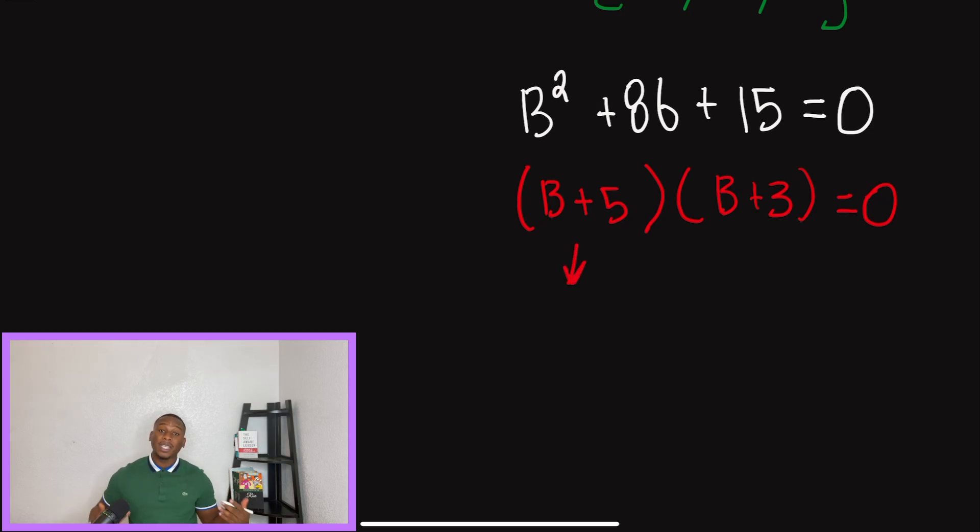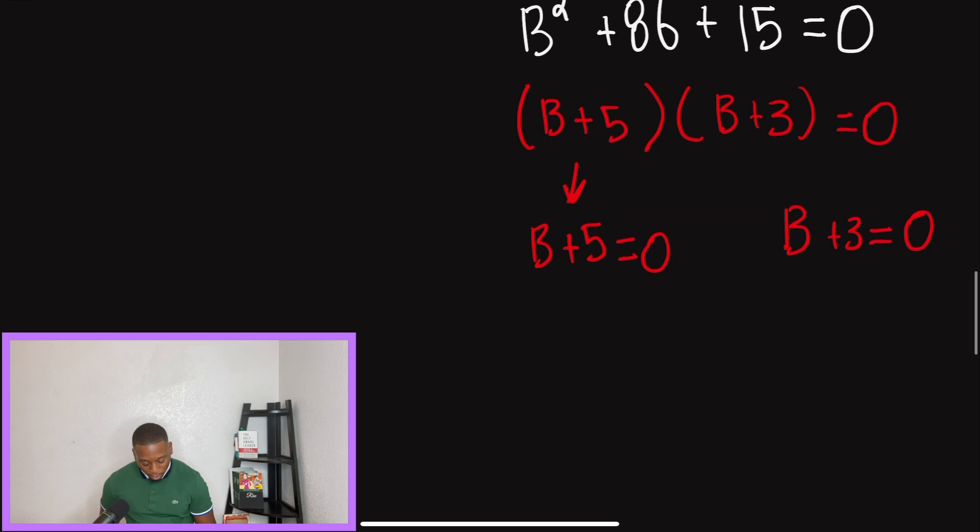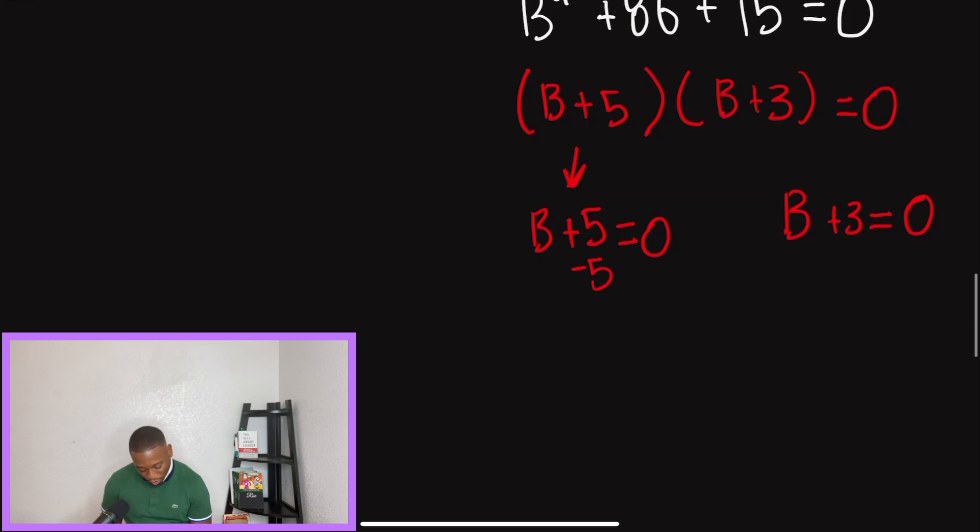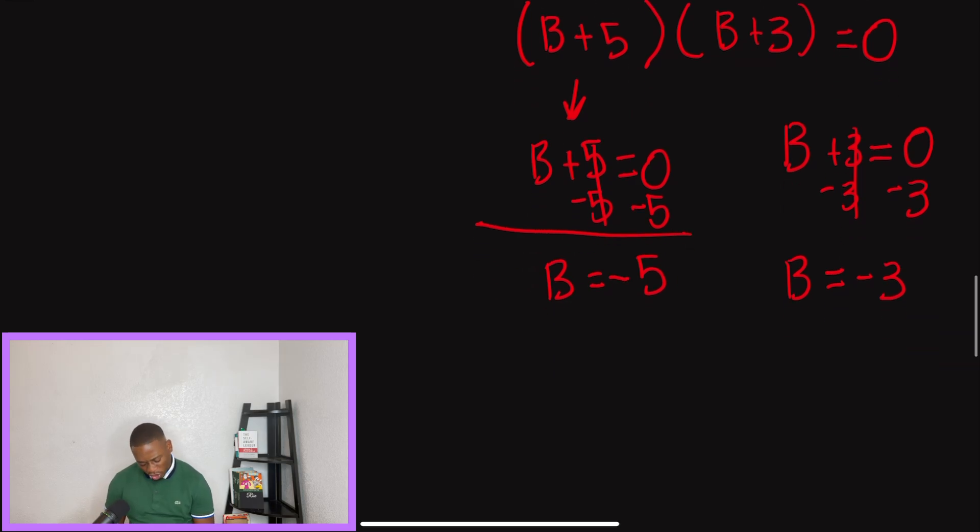So we factored now and at this step, we're going to do the same thing we did to the previous problems. We're going to set our factors equal to zero. So now I set my factors equal to zero and I'm going to have as an answer, B is going to be equal to negative five, and B is going to be equal to negative three. And we'll just draw in the solution set real quick to finish this thing off all the way.